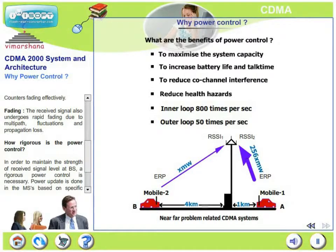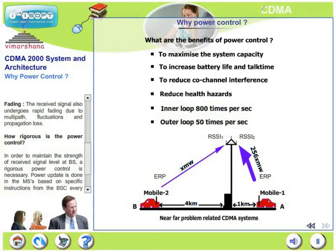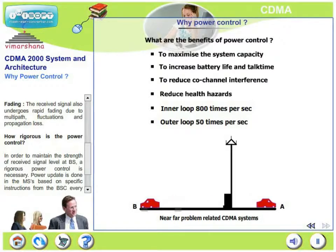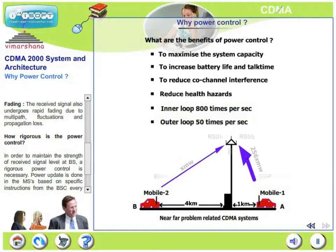What is fading? The received signal also undergoes rapid fading due to multipath fluctuations and propagation loss. We have also seen there is short-term fading called Rayleigh fading, and long-term fading called propagation fading.